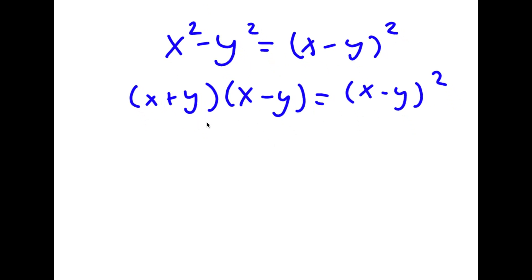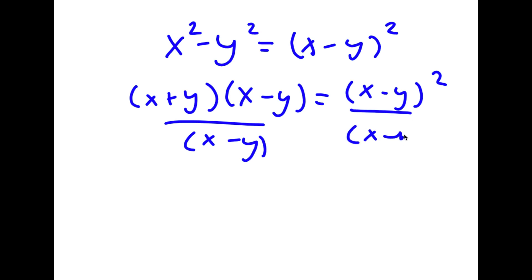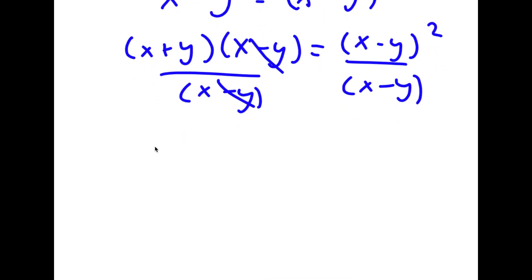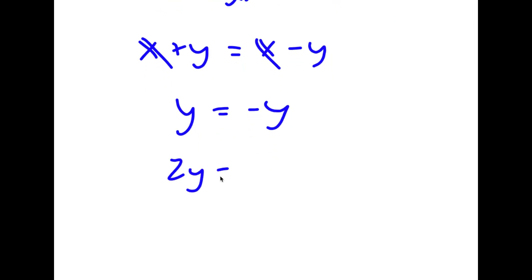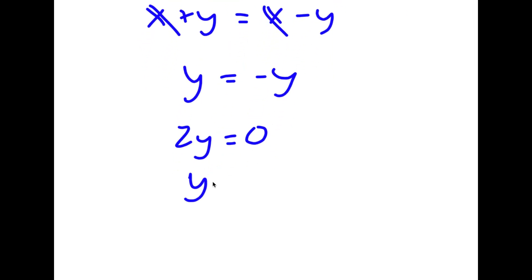Now I'm going to divide both sides by (x minus y). These two cancel out and I'm left with x plus y is equal to x minus y. The x's cancel, so I have y is equal to negative y, meaning 2y equals zero and y equals zero.